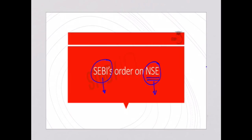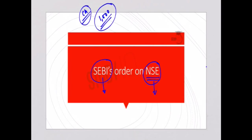The Securities and Exchange Board of India, that is SEBI, ordered the NSE — National Stock Exchange — to pay a fine of 1000 crore rupees over certain irregularities. Based on this we will see what the scam is all about, the authority of SEBI, how NSE broke the rules, and how SEBI protects individual investors.